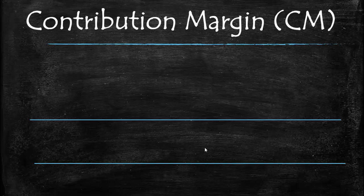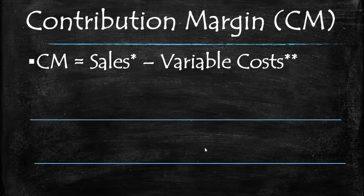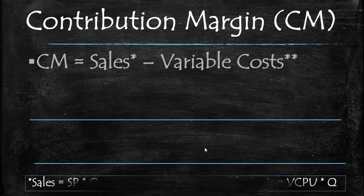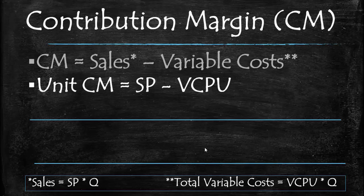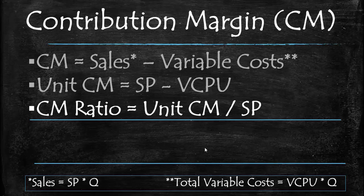Contribution margin is the difference between total sales and variable cost. By definition, contribution margin is the amount that remains to cover fixed costs. On a per unit basis, unit contribution margin equals the selling price minus the variable cost per unit. Expressed as a ratio, contribution margin indicates what percentage of sales dollars is available to cover fixed costs. This concept focuses primarily on variable costs and fixed costs.